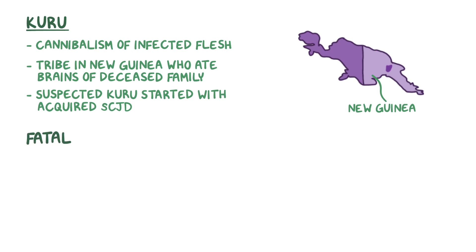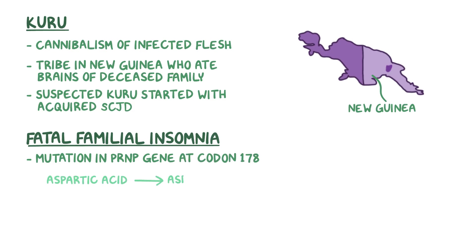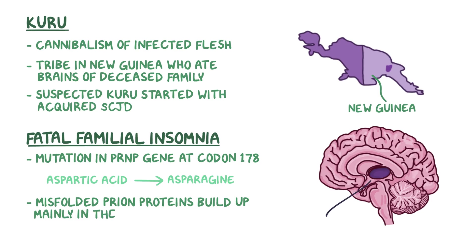Another disease is fatal familial insomnia, which is also caused by a mutation in the PRNP gene at codon 178, where aspartic acid is substituted with asparagine — an interesting example of two different clinical diseases developing from different mutations in the same gene. In fatal familial insomnia, misfolded prion proteins build up mainly in the neurons of the thalamus that help regulate sleep, rather than causing the typical spongiform degeneration of the cerebral cortex and cerebellum that happens in other prion diseases.